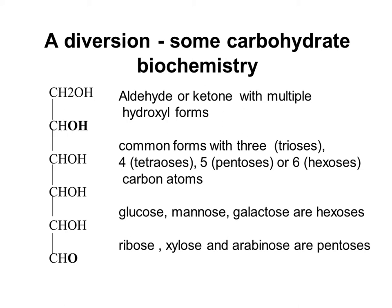Shown in this picture is a hexose molecule because it comes with six carbons. Aside from hexoses, you also have five-carbon pentoses, four-carbon tetraoses, or three-carbon trioses. These are the common forms of sugars. Examples of hexoses include glucose, mannose, and galactose, while examples of pentoses include ribose, xylose, and arabinose.